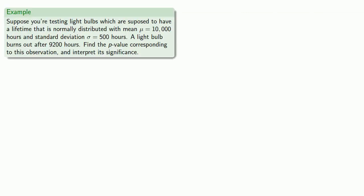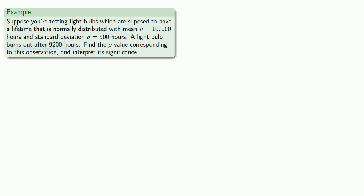For example, suppose you're testing light bulbs which are supposed to have a lifetime that is normally distributed with mean equal to 10,000 hours and a standard deviation of 500 hours. A light bulb burns out after 9,200 hours. Let's find the p-value corresponding to this observation and interpret its significance. The first thing we'd like to do is determine how far away from the mean we actually are.